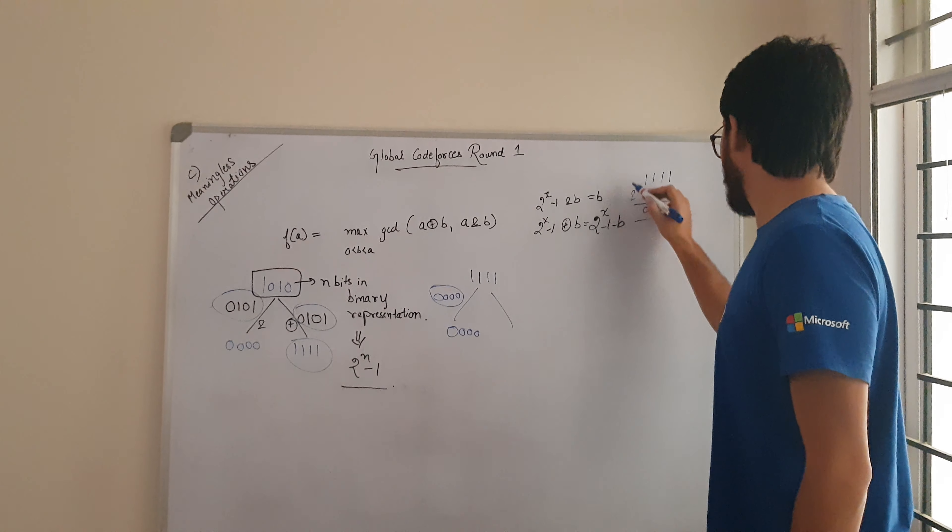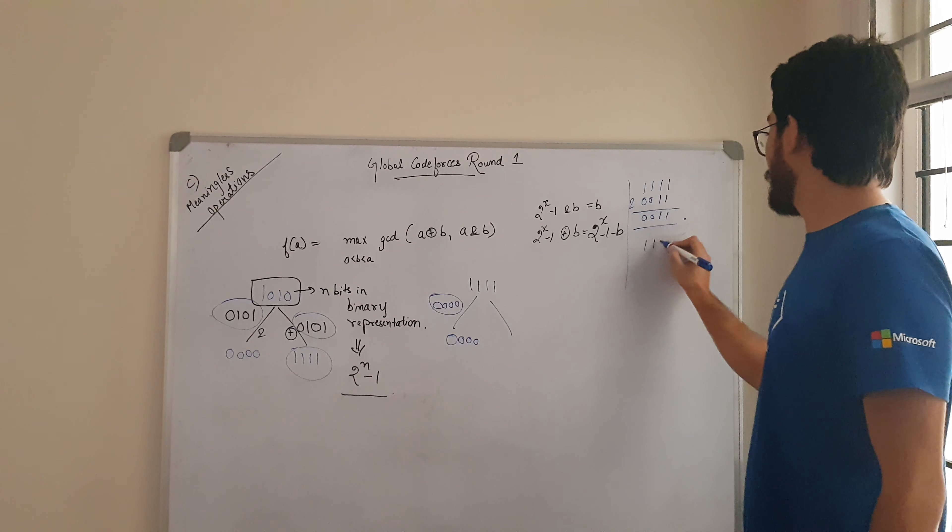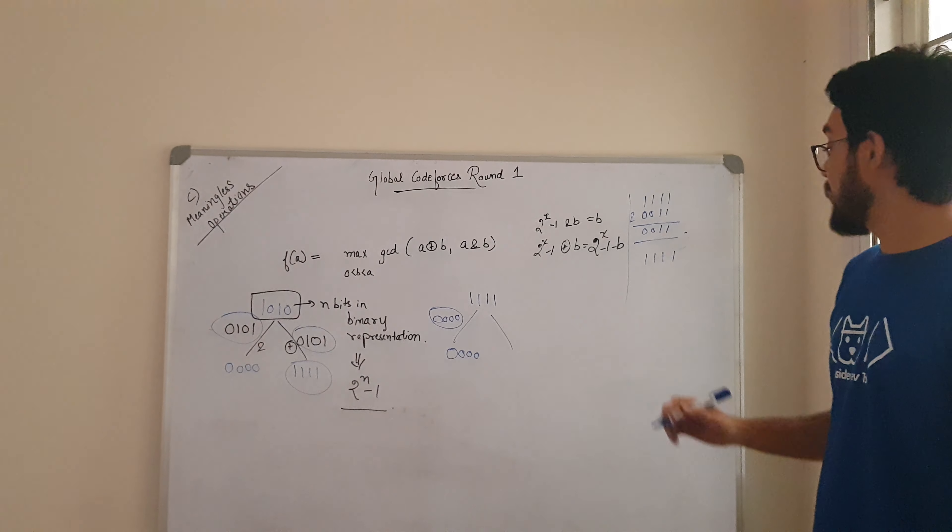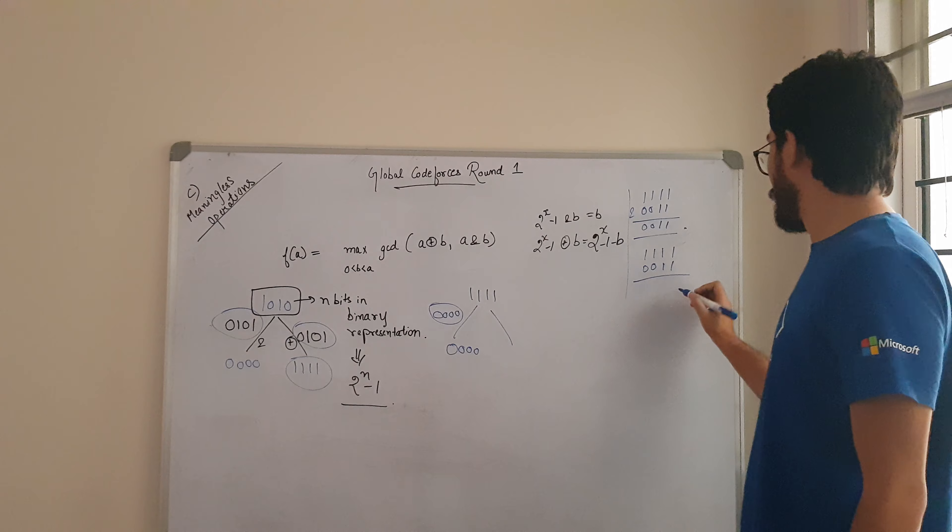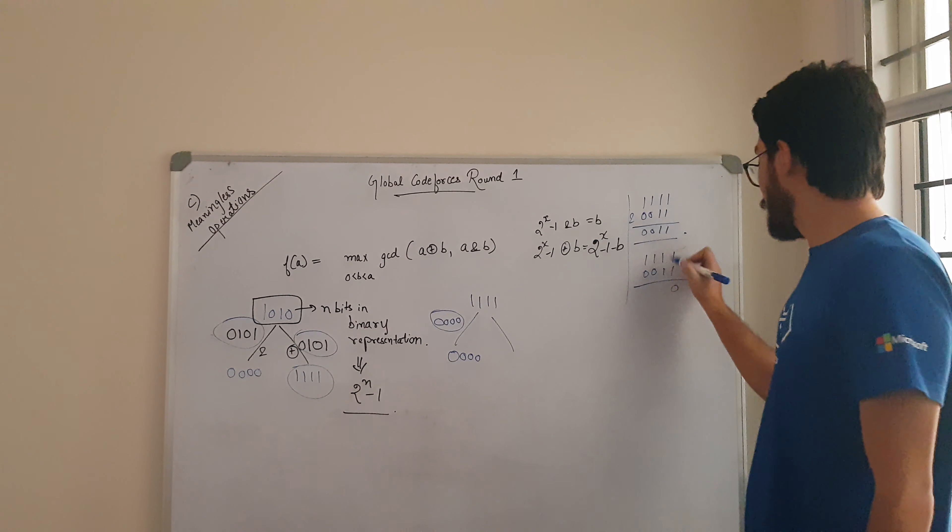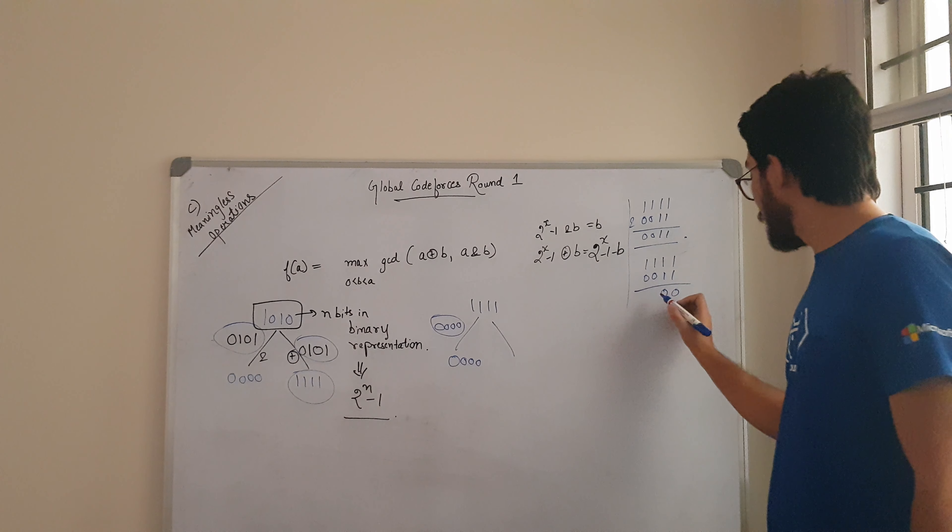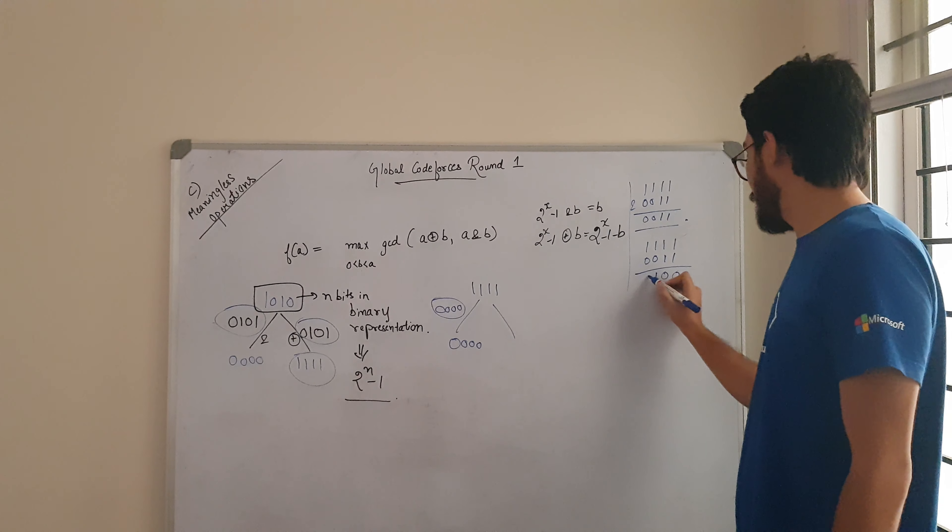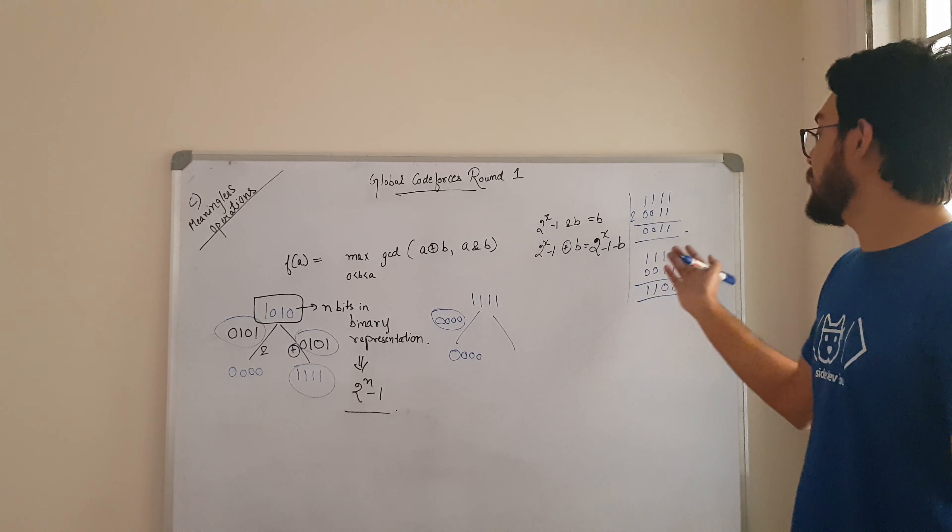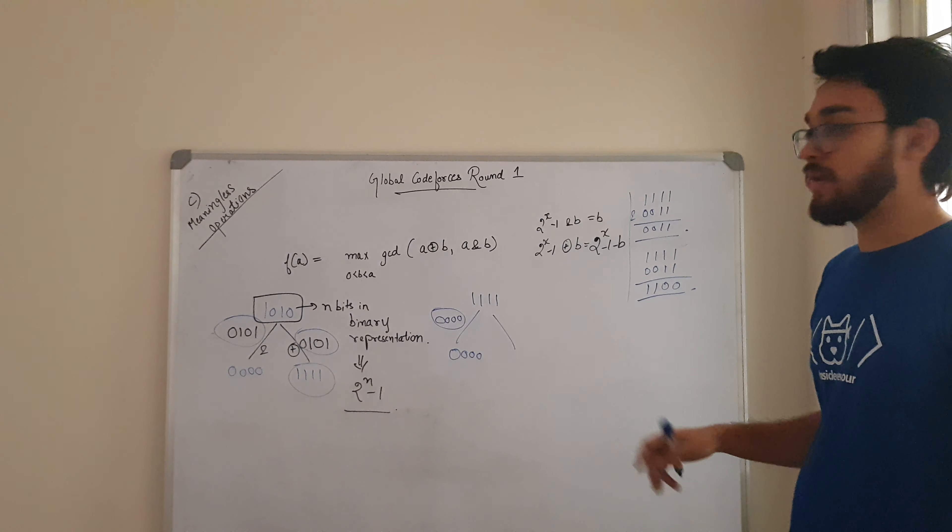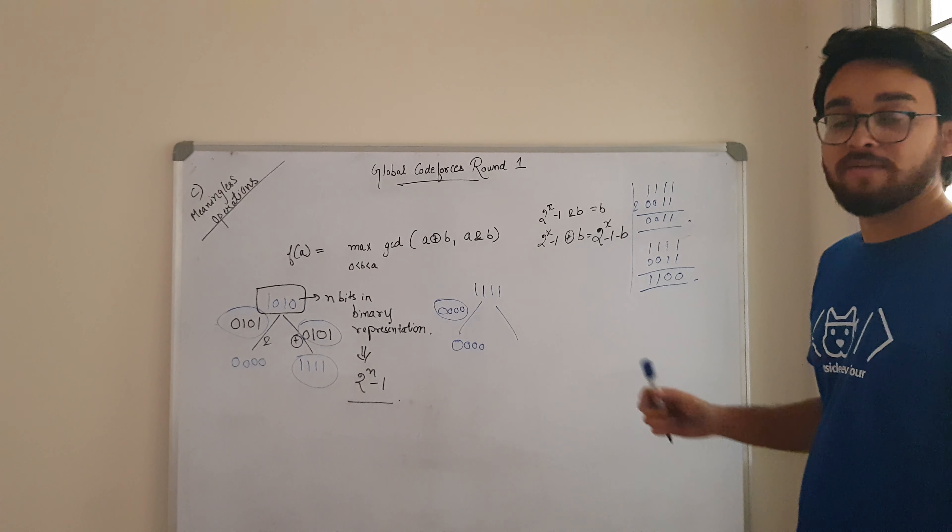I was ANDing here. Now if I have 1, 1, 1, 1. And if I want to XOR 0, 0, 1, 1. 1 and 1 XOR is 0. 1 and 1 XOR is 0. 1, 0 XOR is 1. 1, 0 XOR is 1. Which is basically 12. 15 minus 3, 12. So these are the properties that we can use.